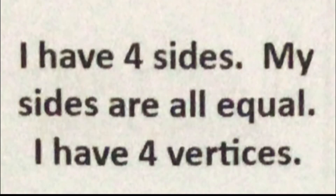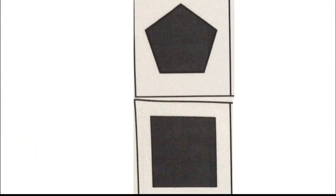I have four sides. My sides are all equal. And I have four vertices. Your options are a pentagon or a square. The answer is a square, because squares have all equal sides. And also, if you picked a pentagon, the pentagon has five sides, so that won't work.